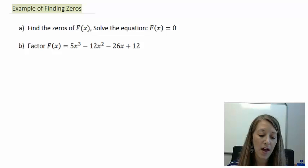F(x) is equal to 5x to the third minus 12x squared minus 26x plus 12. In part a, we want to find the zeros, meaning we want to set our equation equal to zero. And in part b, we want to factor this.